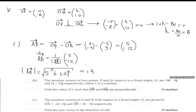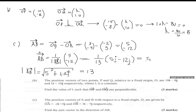Since the magnitude is 13, the unit vector AB equals 1 over 13 times (5i minus 12j). If you want to divide through by 13, you can write it as 5 over 13 i minus 12 over 13 j. Either form is acceptable - this is the unit vector.